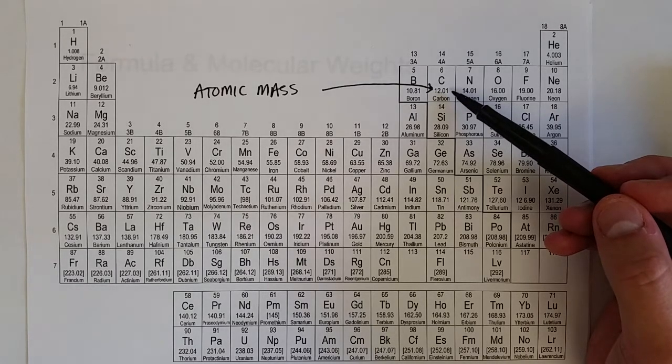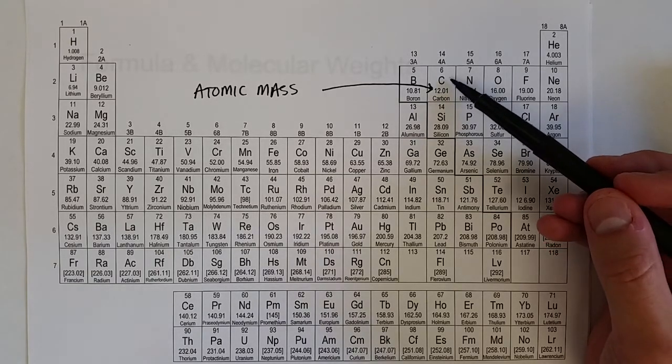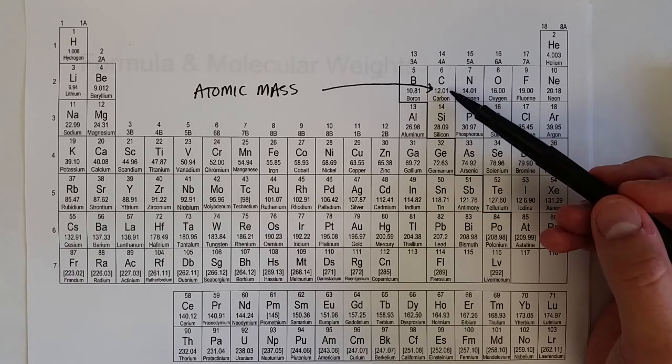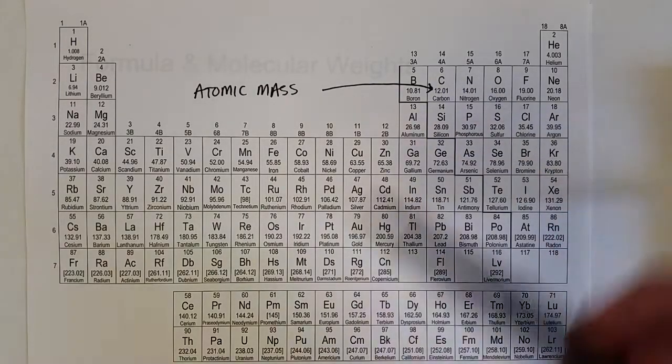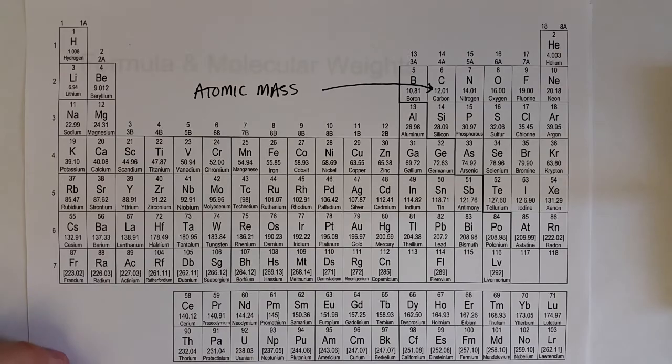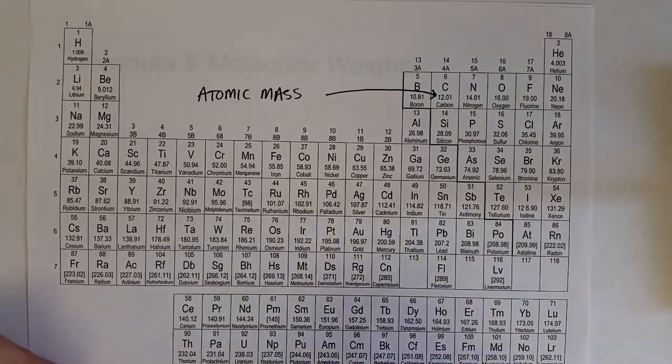The atomic mass can have a couple of different units. The first units we learned about was atomic mass units. So on average, a carbon atom weighs 12.01 amu. And one amu is about 10 to the negative 27th kilograms, so it's a very small mass.